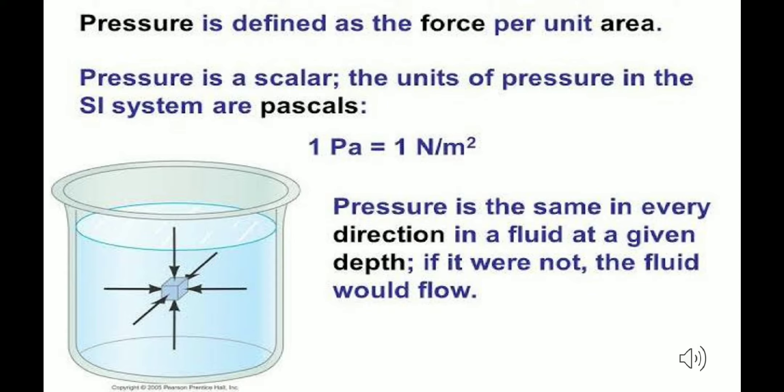Pressure is defined as force per unit area. Whatever force acts per unit area is the pressure at that point. Pressure is a scalar quantity, and its SI unit is Pascal. The formula for pressure is: Pressure = Force / Area, or in physics terms, Pressure = Thrust / Area.